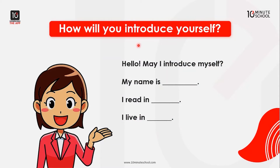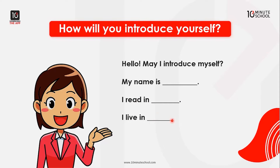How will you introduce yourself? My name is Fatin. My name is Aisha. My name is Rohim. I am reading in class 5. I am reading in class 4. I live in Dhaka. I live in Khulna. I live in Borishal.